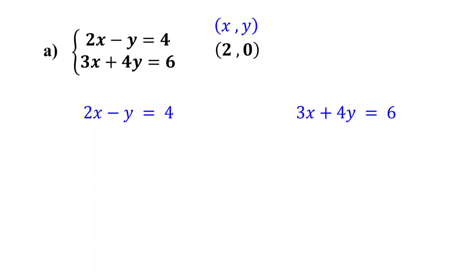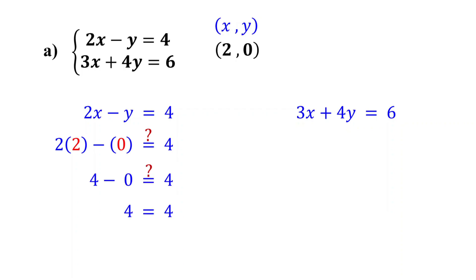Let's start with the first equation. Replace x with 2 and y with 0. Now 2 times 2 is equal to 4. 4 minus 0 is 4, which indeed equals 4. So the ordered pair (2, 0) satisfies the first equation.